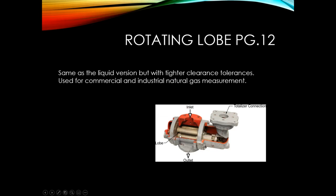The second gas type is rotating lobes — a cutaway version of the same technology as the liquid rotating lobe, but with tighter tolerances. These are used for commercial and industrial gas measurement. Lobes can have two or three lobes, with two sets interacting with each other to encapsulate a certain volume of flow and move it from inlet to outlet.